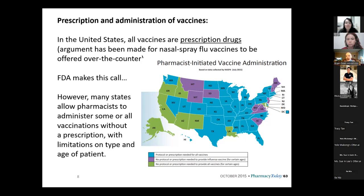This varies very widely from state to state — not just in terms of whether they have a protocol or prescription requirement, but also which vaccines pharmacists are permitted to administer: flu vaccines, COVID vaccines, childhood vaccines, or vaccines for older adults like pneumococcal pneumonia or shingles. Some states are very permissive and pharmacists can prescribe and administer just about everything; others are more restrictive. It's the same around the world. In Ireland, pharmacists have only been allowed to prescribe and administer flu vaccines since 2011. In Denmark, Portugal, Switzerland, and the UK, pharmacists can administer flu vaccines. In France, they just gained that ability in 2019.